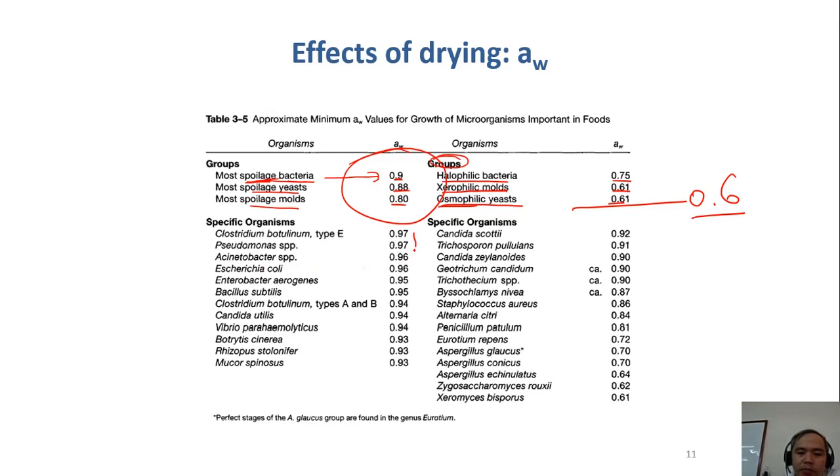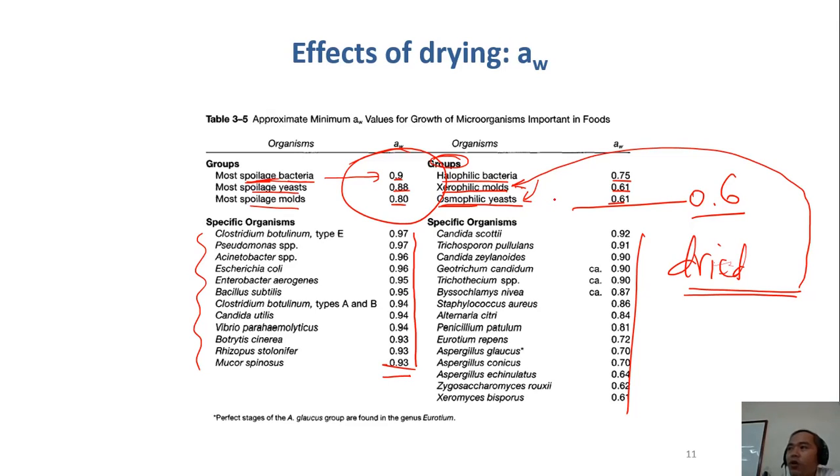And here you see, these are the minimum water activity where there is pathogen to grow, and so on. So it's easier to inhibit bacteria than yeast and mold in terms of dry products. So when you look at the shelf life of dry meat, dry products, in terms of microbial changes, you should pay attention on the mold and the yeast rather than bacteria.